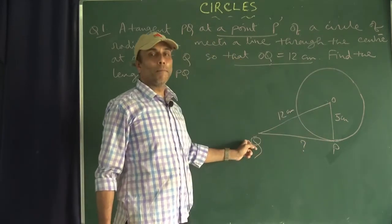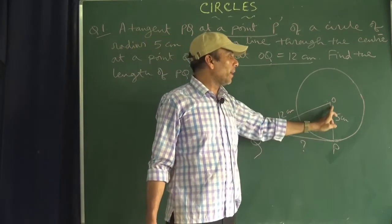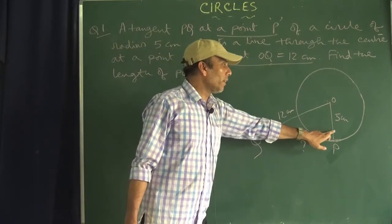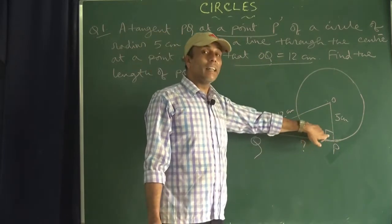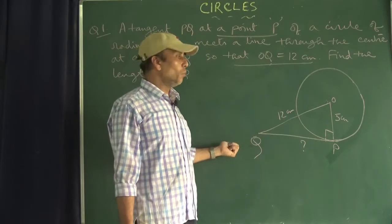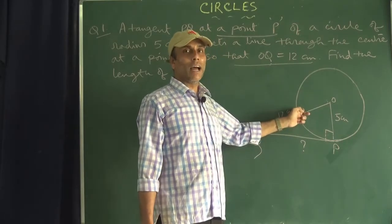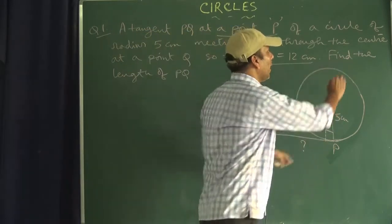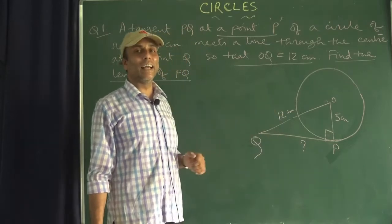Now, what type of triangle is OPQ? As proved in previous videos, the tangent is perpendicular to the radius at the point of contact. So the angle at P is 90 degrees. We have a right-angle triangle where OP is the perpendicular and OQ is the hypotenuse. We need to find the length PQ.